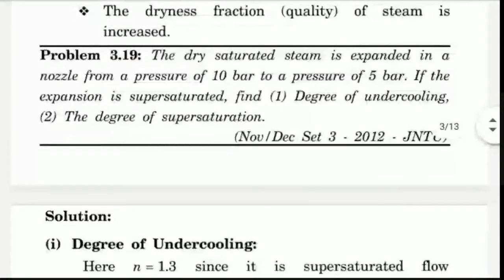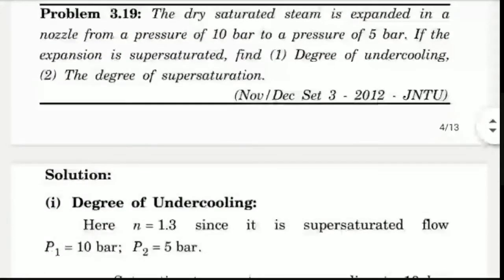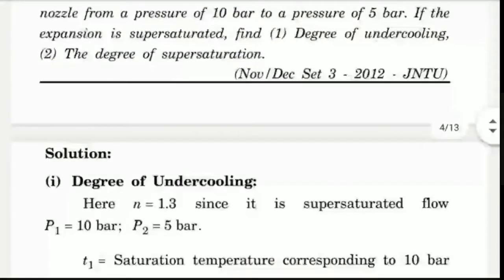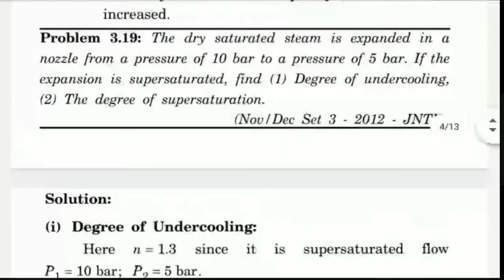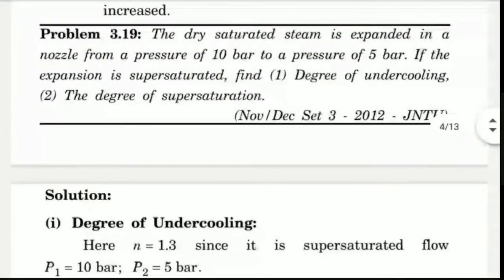Dry saturated steam is expanded from a nozzle from 10 bar to 5 bar. We use P1 equals 10 and P2 equals 5 bar. If the expansion is supersaturated, the steam is called dry saturated steam.